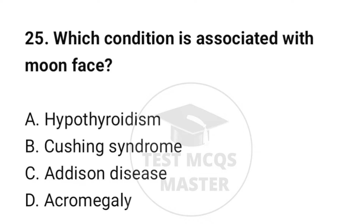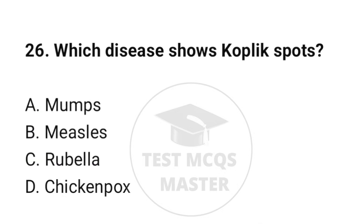Question number 25: Which condition is associated with moon face? The correct option is B: Cushing's syndrome. Question number 26: Which disease shows Koplik spots? The correct option is B: Measles.